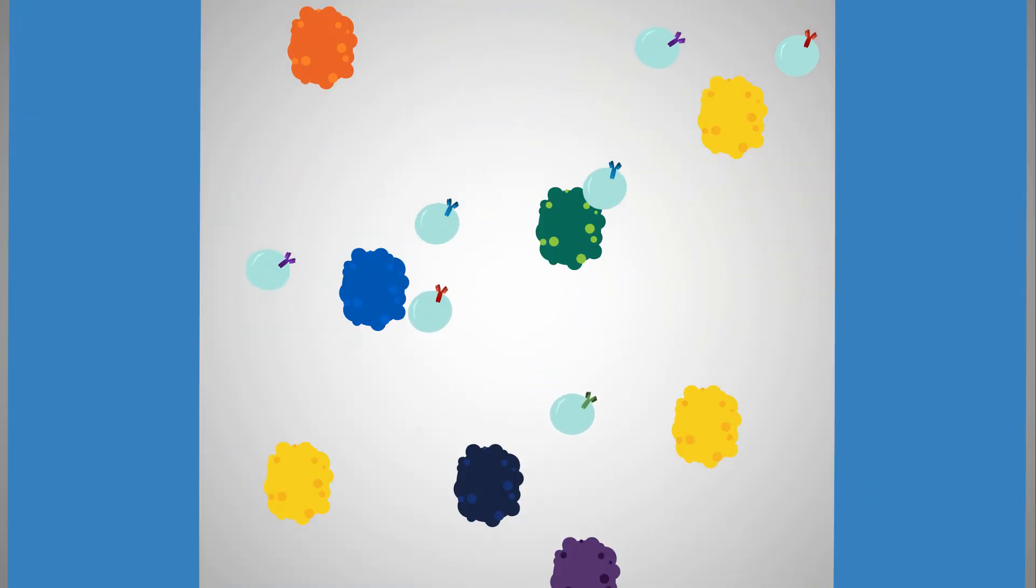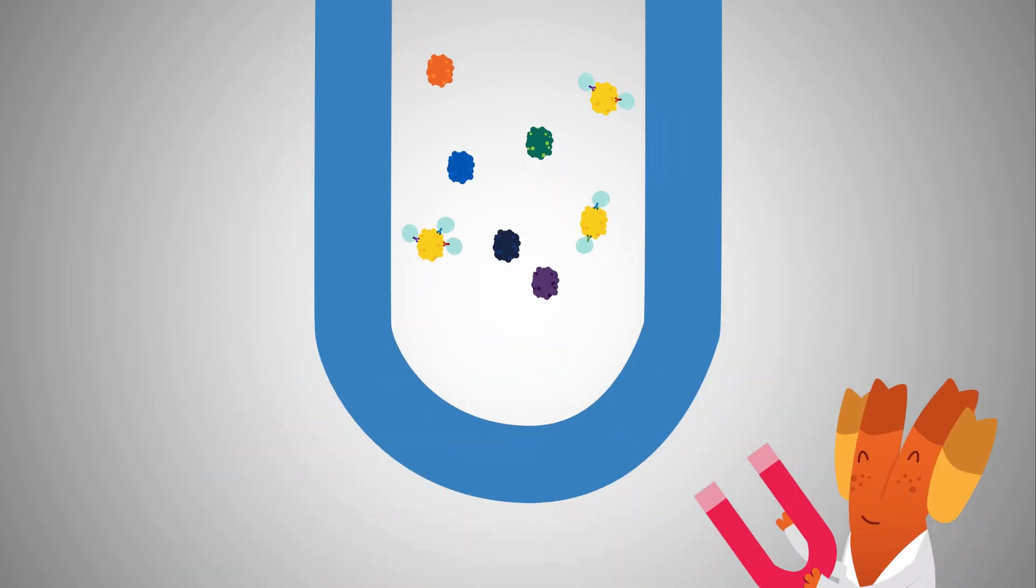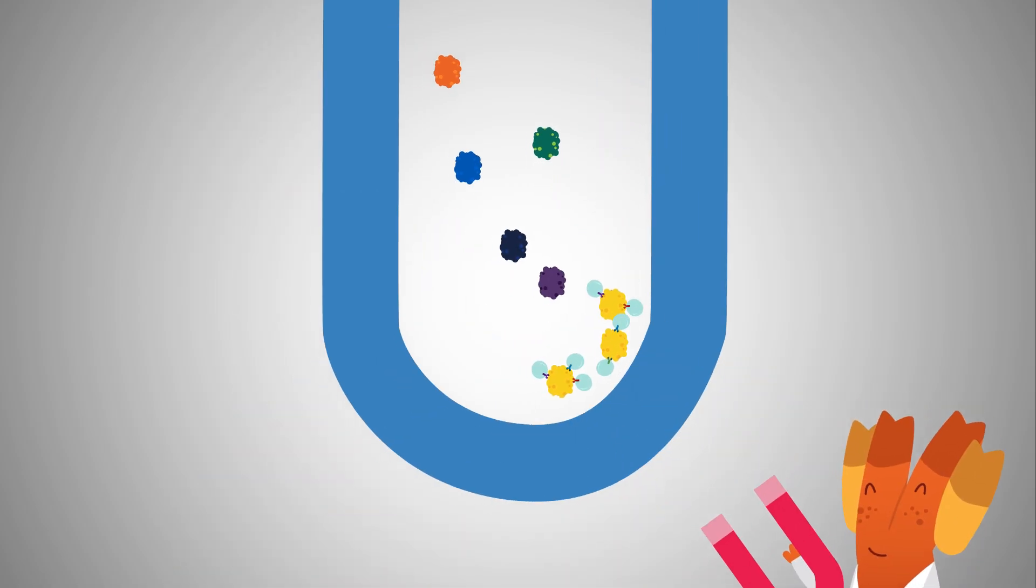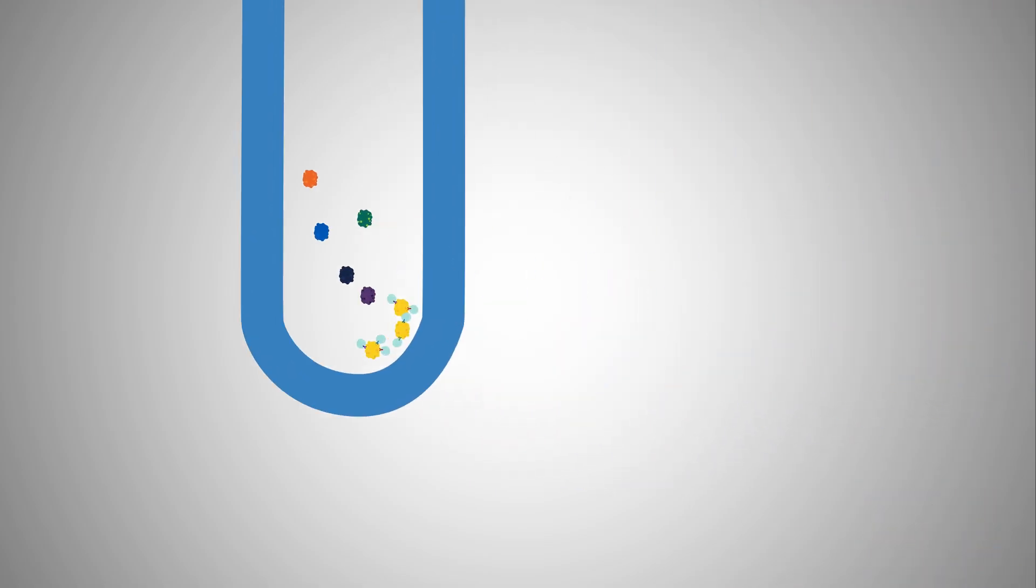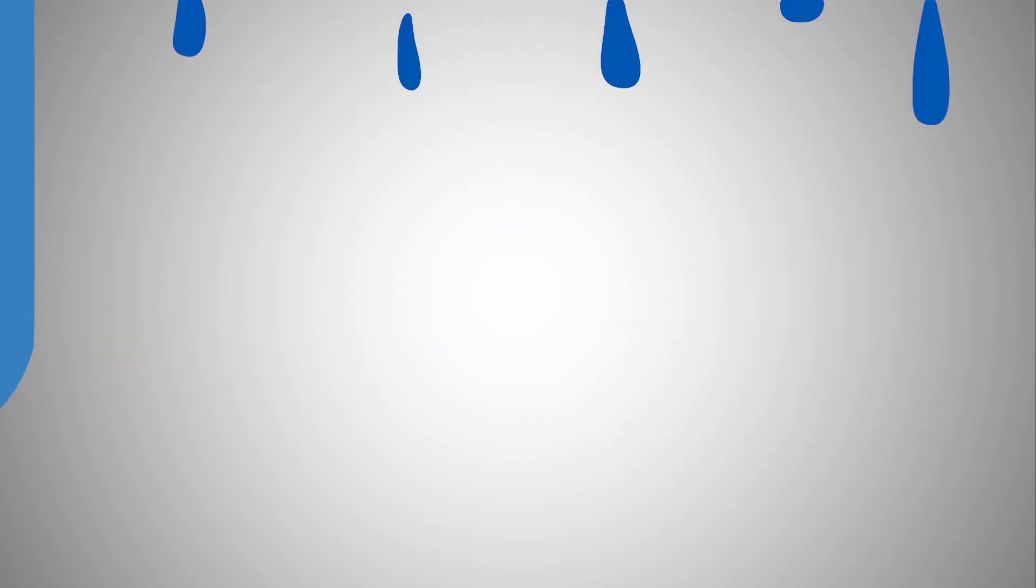As the beads mix and mingle with your lysate, the antibody will bind to your target, forming antibody-antigen complexes. The bead antibody-antigen complexes are then isolated using either magnets or centrifugation, and the antigens are eluted.